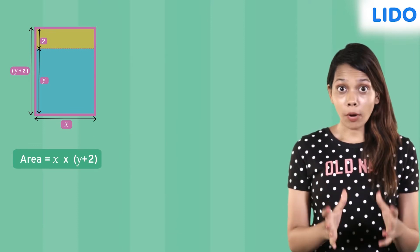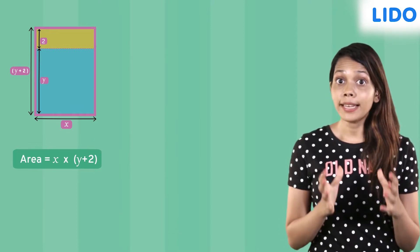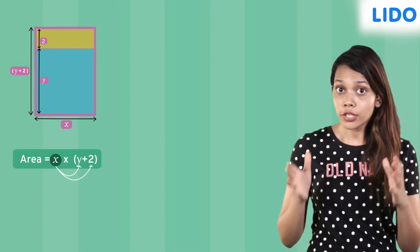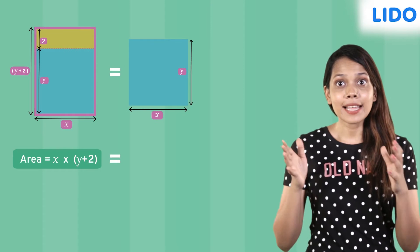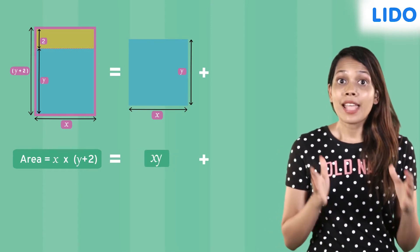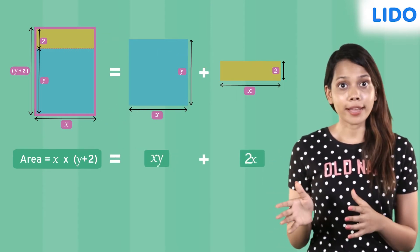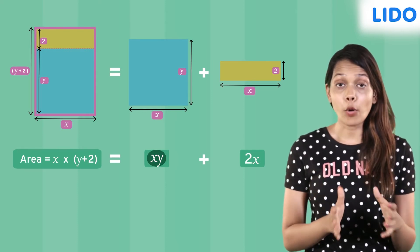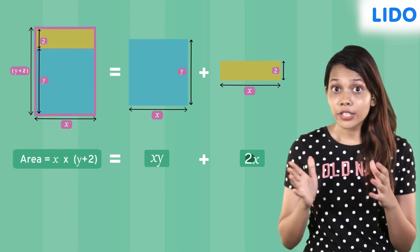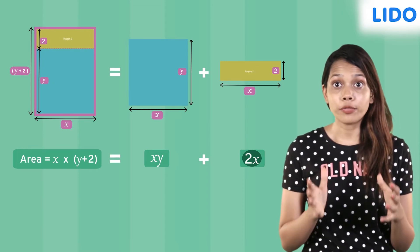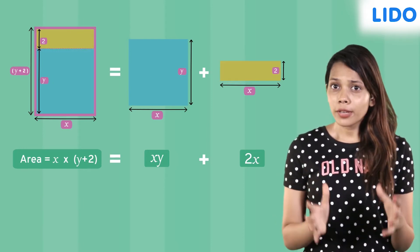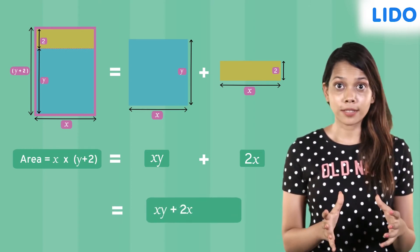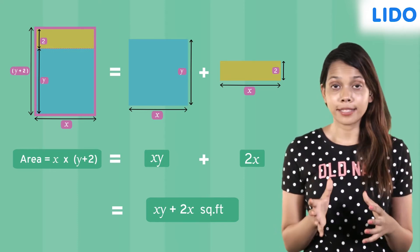We apply the distributive property and multiply the monomial x with each term of the binomial y and 2 separately which is x times y, xy and x times 2, 2x. Notice that xy represents the area of region 1 and 2x represents the area of region 2. The product of the expression is the sum of areas of both regions which is xy plus 2x square feet. It is the area of the entire dining area.